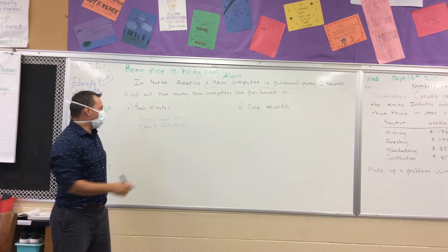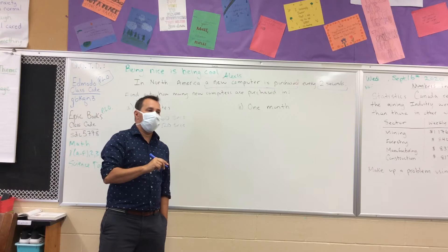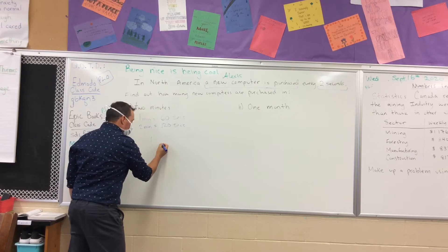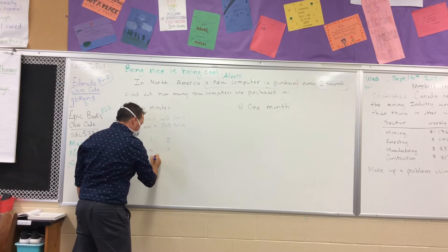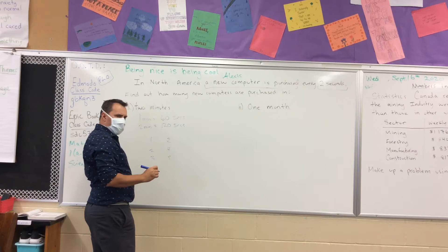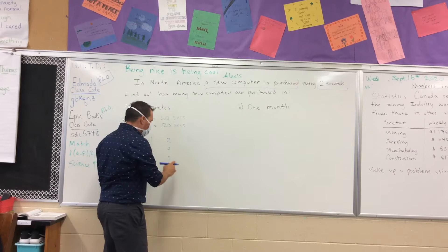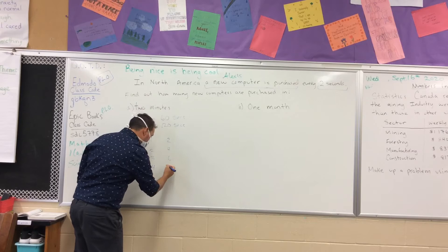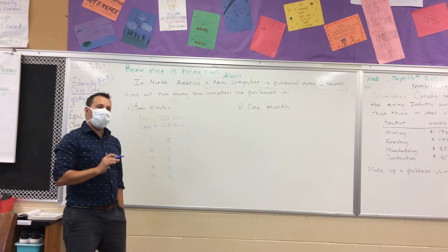Keegan says we multiply it by two. There are a lot of ways to figure this out. One computer in two seconds, two computers in four seconds. It's going up by two every two seconds — so six seconds for three computers, eight seconds for four computers, ten seconds for five computers.